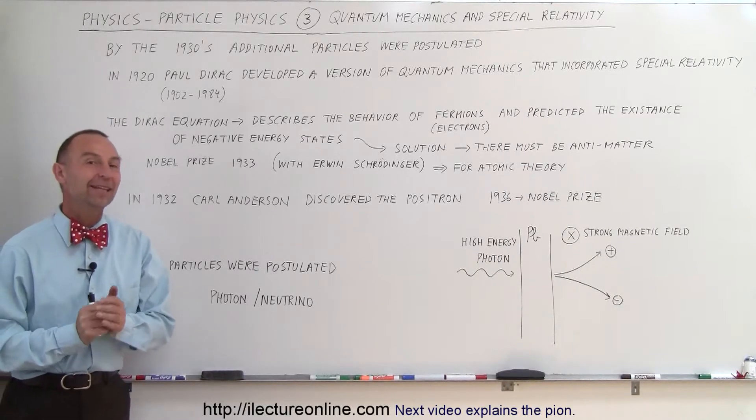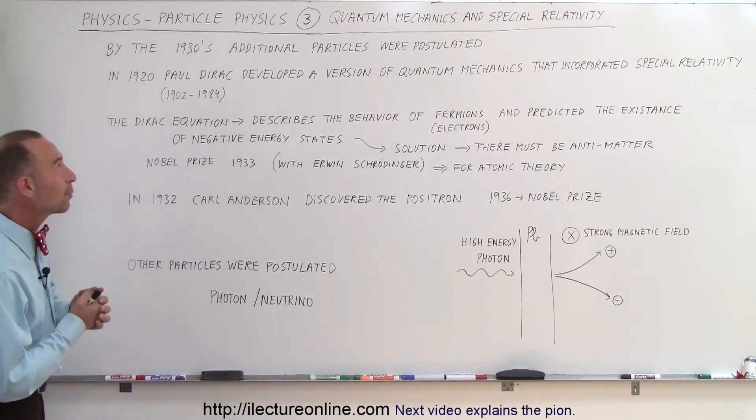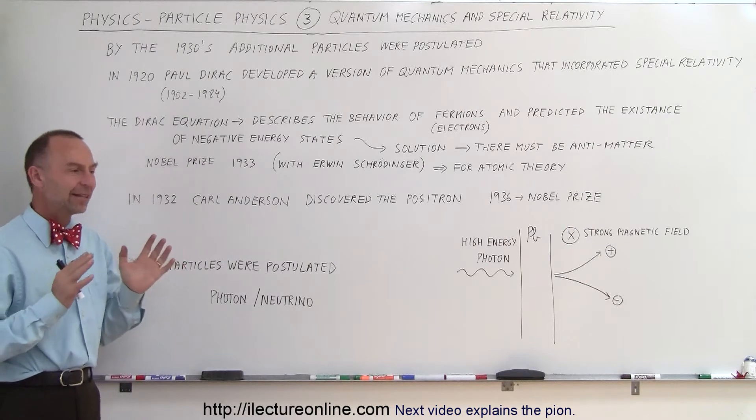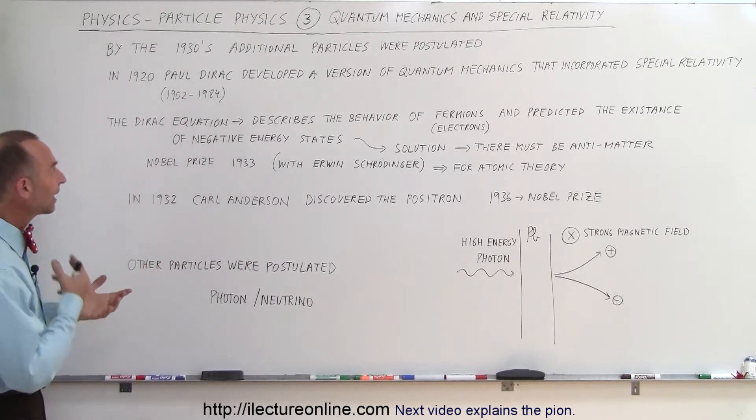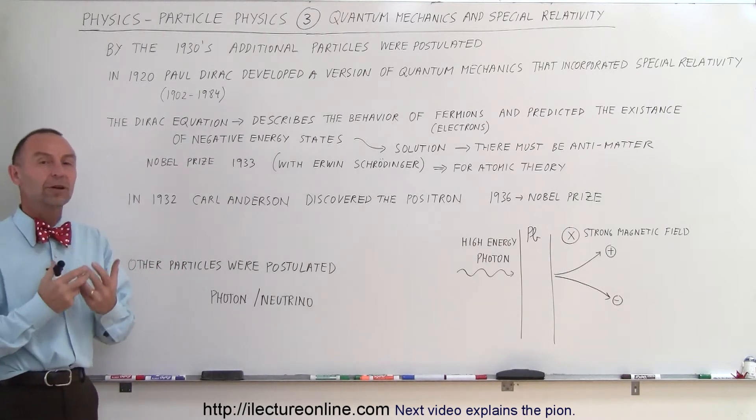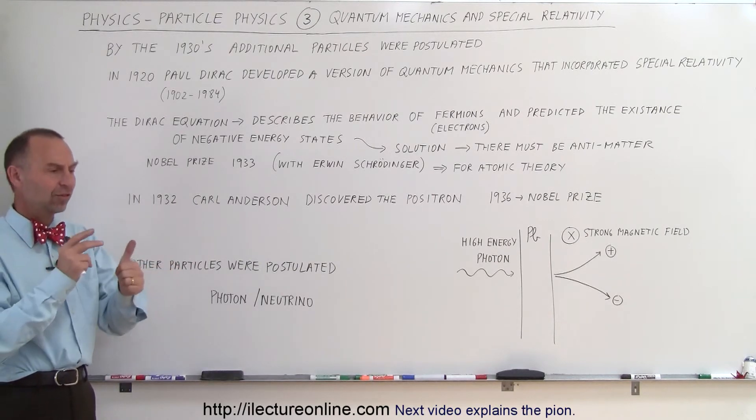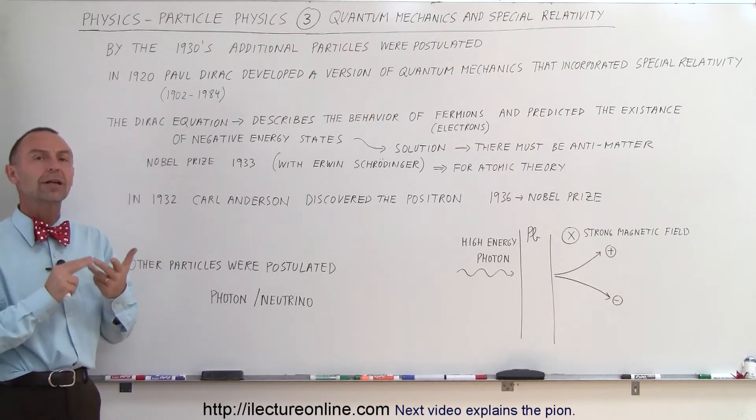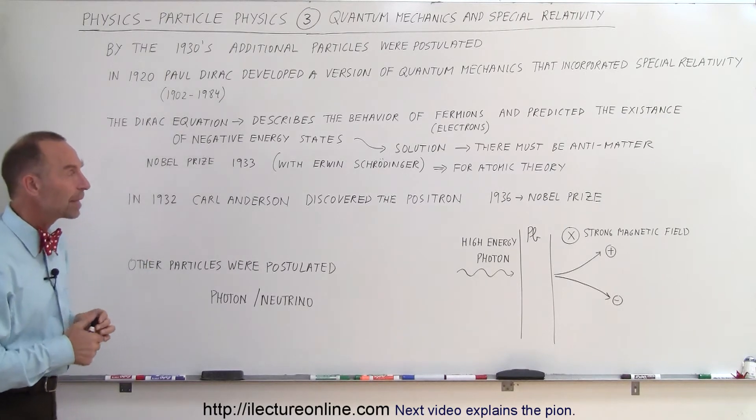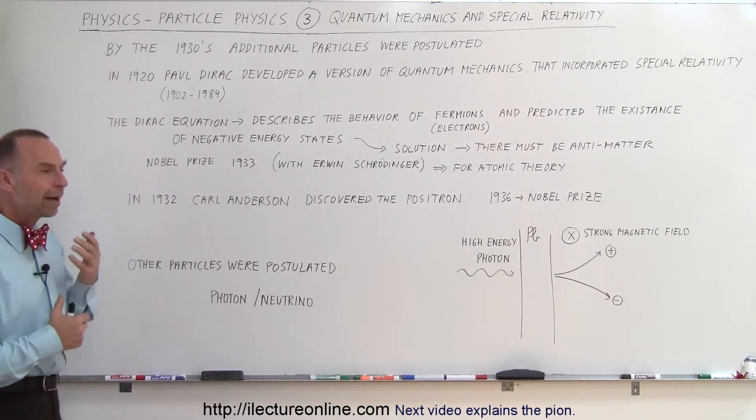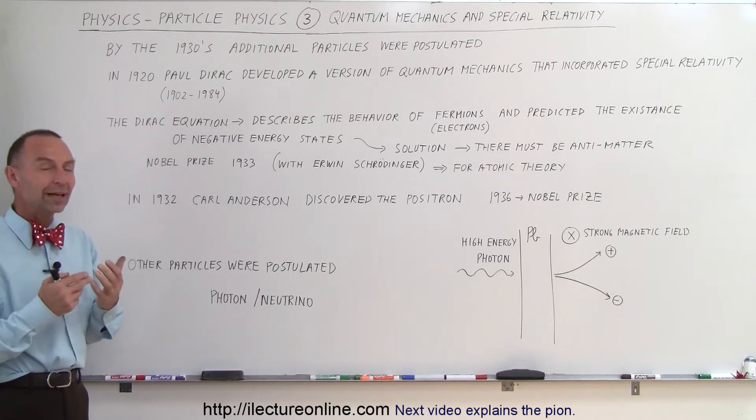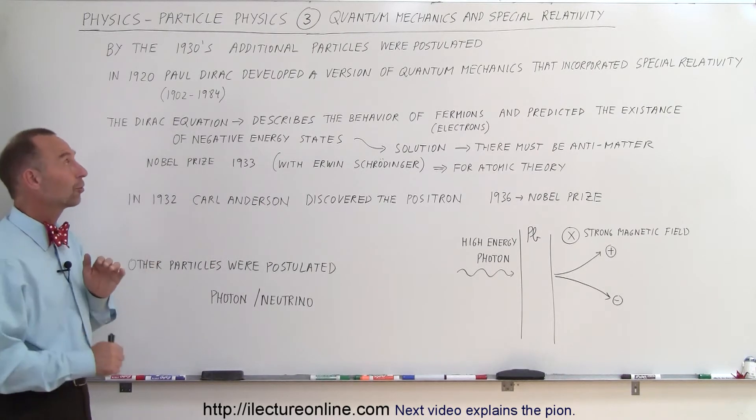Welcome to ElectronLine and the next video here continuing with particle physics is on the 1930s. By the 1930s there were additional particles being postulated. So far they realized that an atom consisted of a proton, a neutron, electron, or a combination thereof, but by studying this more they realized there may be more particles than just those three.